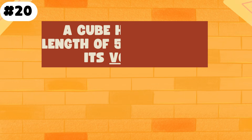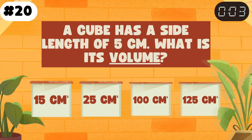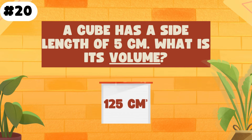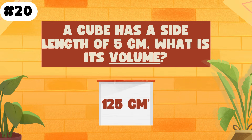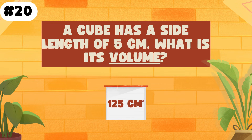A cube has a side length of 5 centimeters. What is its volume? Since a cube's sides are all equal to each other, you would find the volume by multiplying the cube's length, width, and its height all together.